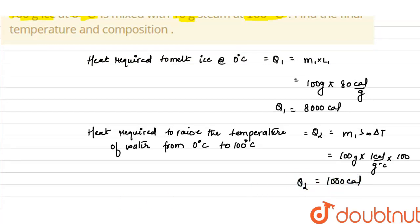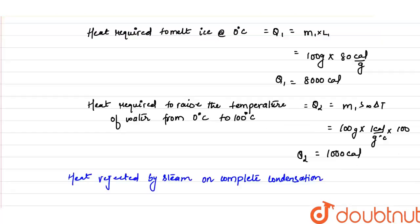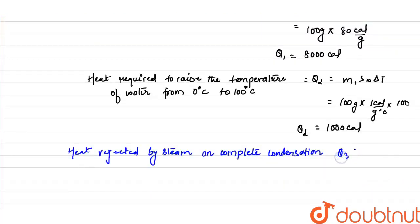Now let us find how much heat the steam will provide on complete condensation. Q3 = mass of steam × latent heat of steam = 10 grams × 540 cal/g = 5400 calories.